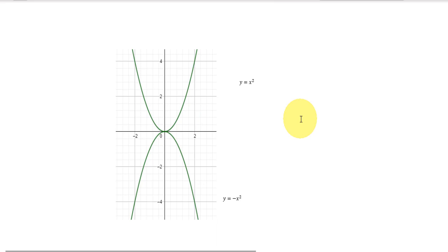The last part of this topic is reflection. The parent function y = x², if we have y = -x², is the same graph reflected upside down. The points are exactly the same.